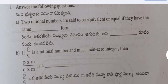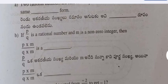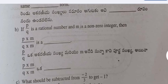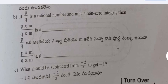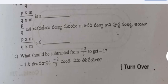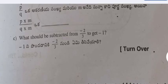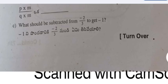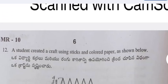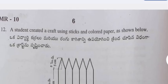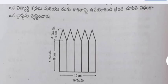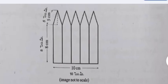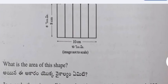Answer the following questions (Section B): Question 11 — Two rational numbers are said to be equivalent or equal if they have the same dash form. Question 12 — If p by q is a rational number and m is a non-zero integer, then p×m by q×m is dash. Question 13 — What should be subtracted from minus 2 by 3 to get minus 1?